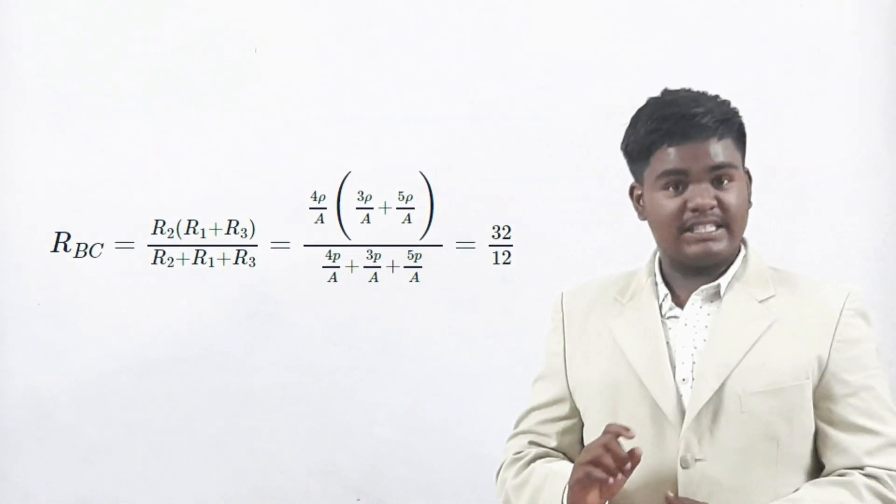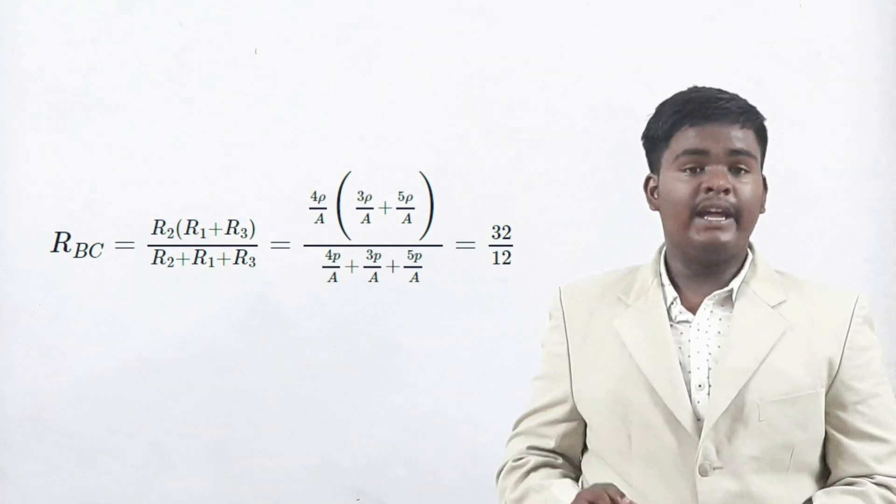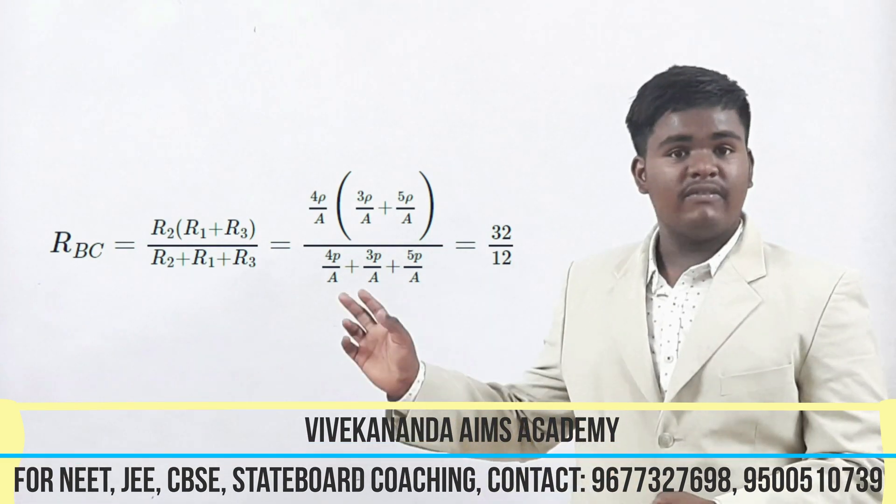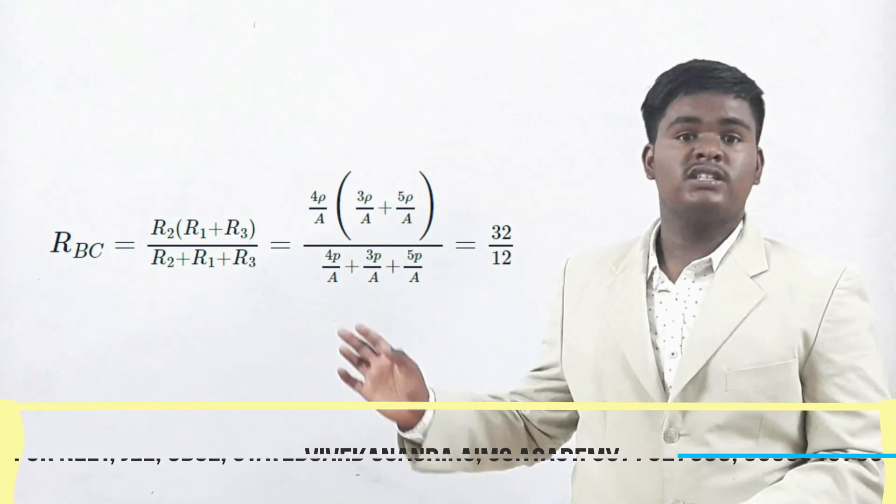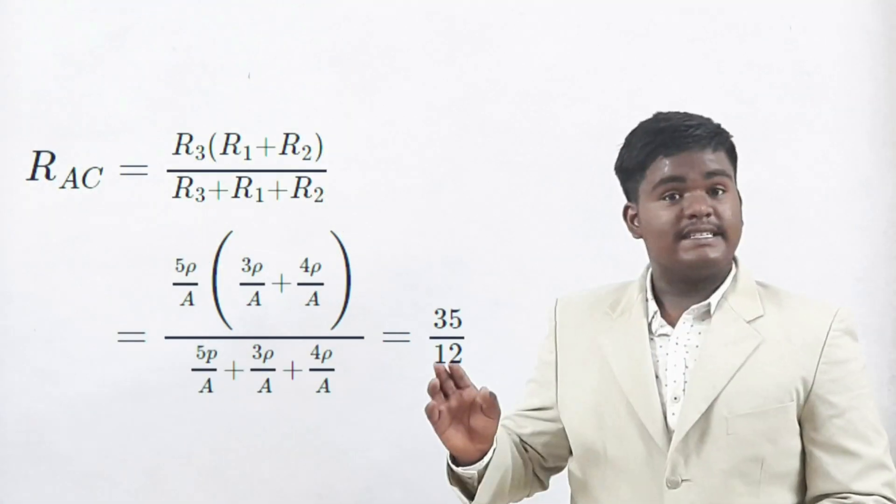Similarly, RBC is equal to R2 into R1 plus R3 by R1 plus R2 plus R3. If we substitute R1, R2 and R3 value, we get RBC is equal to 32 by 12.